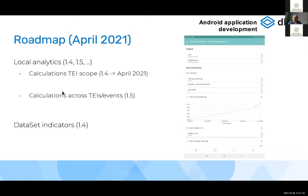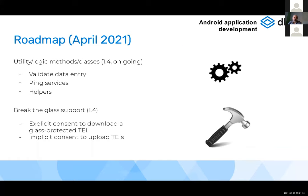Calculations across TEIs and events will be scoped to a single TEI in version 1.4, and then in version 1.5, expected in October 2021, we plan to allow calculations across multiple TEI elements. Dataset indicators are also coming in version 1.4 in April 2021, covering all values of an indicator linked to a dataset.